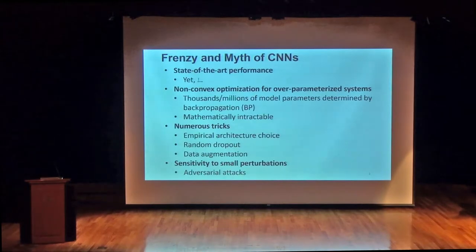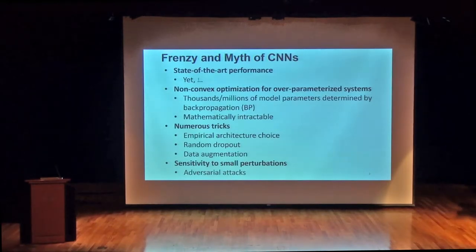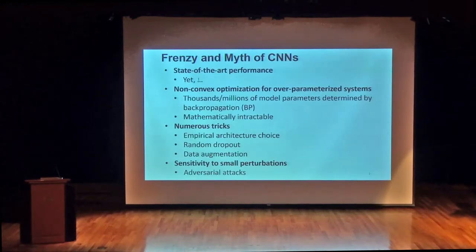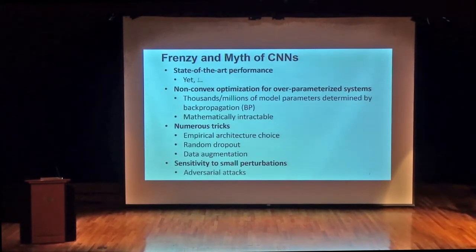People try to prove mathematically why local minima also deliver near-global optimal performance. But rigorous theory only applies to one hidden layer — input layer, output layer, and one hidden layer. Beyond two hidden layers, there is no rigorous mathematics, let alone 100 or 150 layers. So it's almost very difficult to use math to analyze.